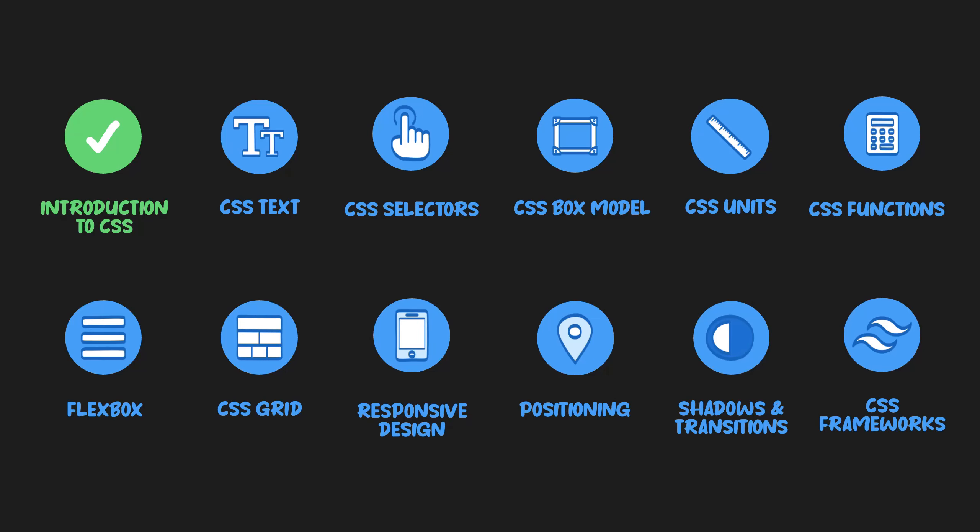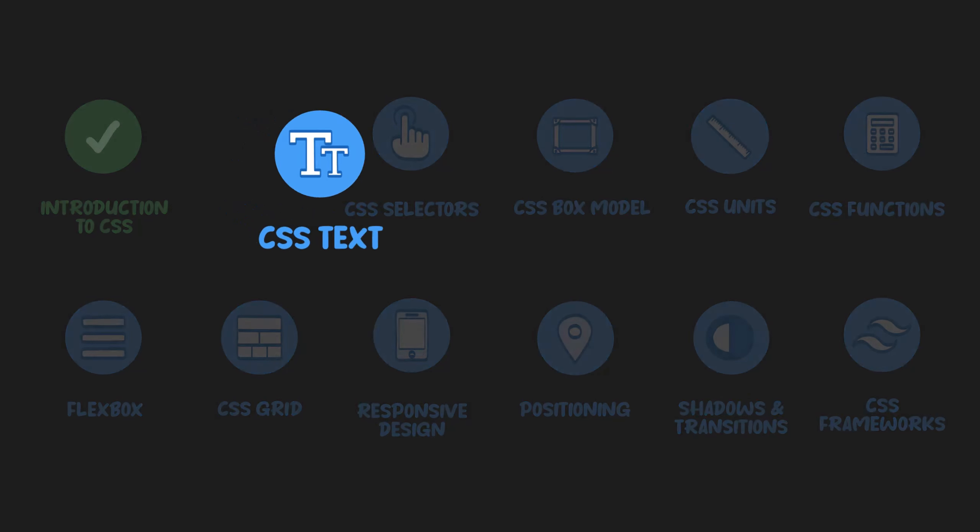Welcome to topic two of the CSS full course: CSS text. In this topic, we'll cover the key aspects of text design, including text styling, spacing, size, font selection, and color, while also beginning to develop a style guide. All complete HTML and CSS coding files, presentation slides, and summary cards from this topic and all other topics in the full course can be downloaded from the description below.